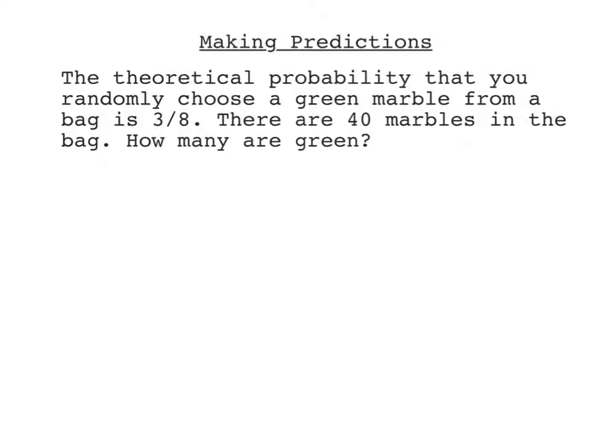Let's take a look at another one. The theoretical probability that you randomly choose a green marble from a bag is 3 eighths. I'm just going to jot that down. The probability of green equals 3 eighths. There are 40 marbles in the bag. We want to know how many are green.